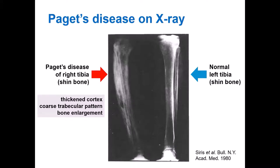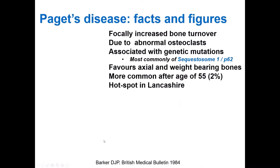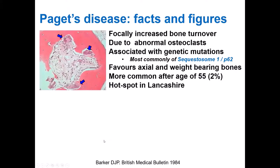We can appreciate the problem more when we look at x-rays. This is an individual with Paget's disease of the right tibia, as indicated here, which is significantly enlarged and deformed as compared to the left, unaffected one. In a nutshell, Paget's disease is due to focal increased bone turnover, which is driven by abnormal osteoclasts.